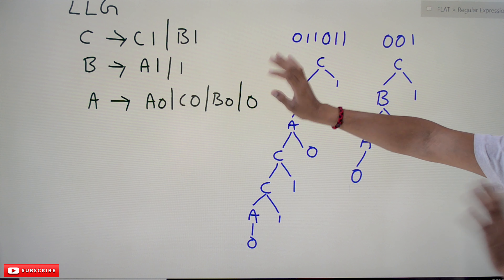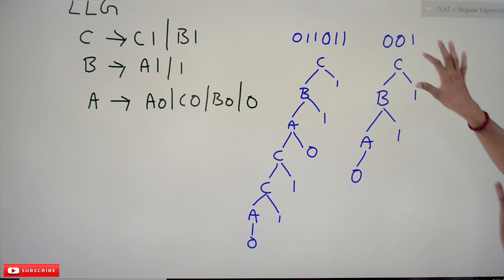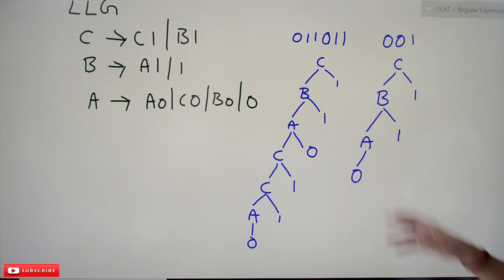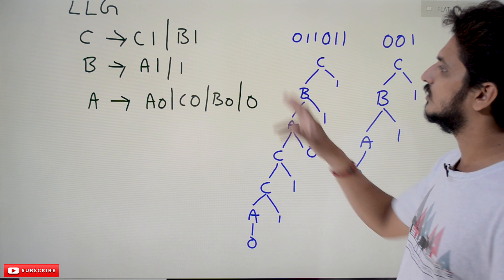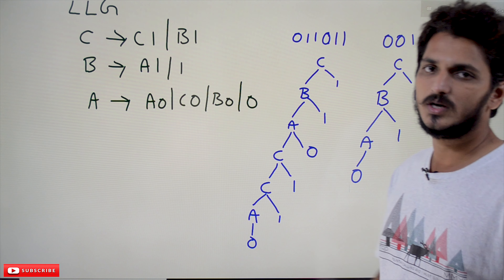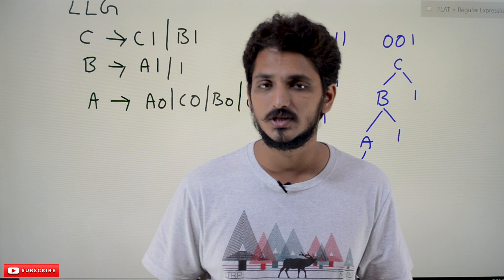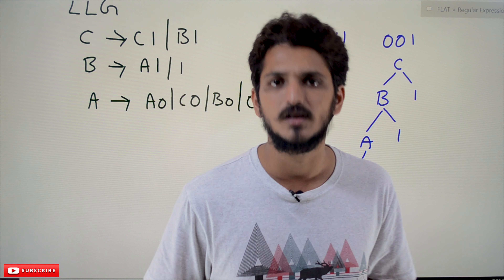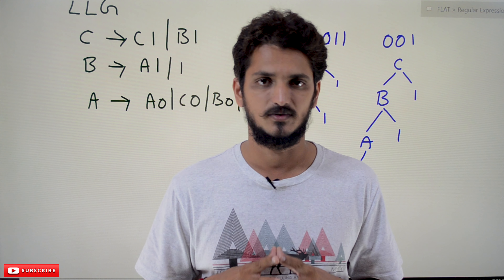You can take any option from these productions and try to generate zero zero one using A, but you won't get it because the last two characters are not one one — that's why it does not accept zero zero one. These productions are working correctly. Hope you understand the concept. If you have any questions, please post in the comment section below. Thanks for watching — if you haven't subscribed, please subscribe and press the bell icon for latest updates.